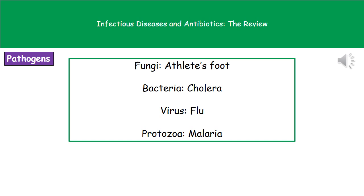Fungi can lead to athlete's foot; bacteria can cause cholera; a virus — an example would be flu; and the protozoa — an example there would be malaria. So the types of pathogen are fungi, bacteria, virus, and protozoa, each with their associated example disease.